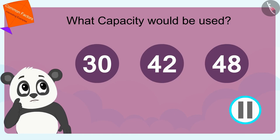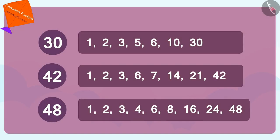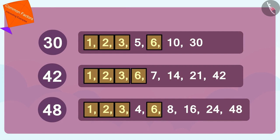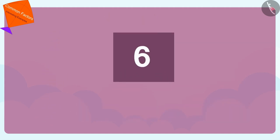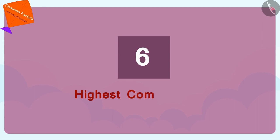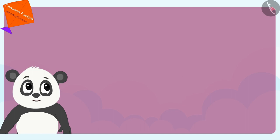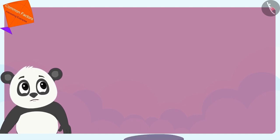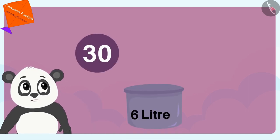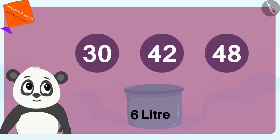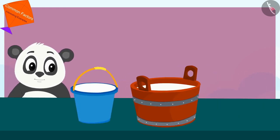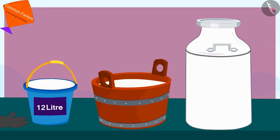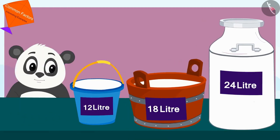The numbers 1, 2, 3, and 6 are the common factors of 30, 42, and 48. Out of them, 6 is the highest number, or the Highest Common Factor. Therefore, Golu would use only the 6-liter pot to measure 30, 42, and 48 liters of milk. Golu measured the milk filled in his pots and labeled them so that he would not forget the amount of milk filled in them.